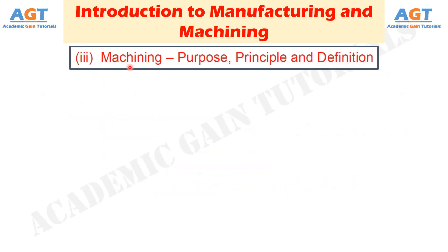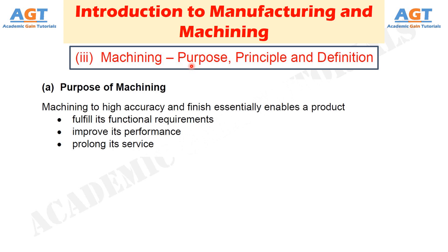Now let's look into the purpose, principle, and definition of machining. First, what is the purpose of machining? Most engineering components such as gears, bearings, clutches, tools, screws and nuts, etc., need dimensional and form accuracy and good surface finish for serving their purposes. Preforming like casting, forging, etc., generally cannot provide the desired accuracy and finish. For that, such preformed parts, called blanks, need semi-finishing and finishing, and it is done by machining and grinding. Grinding is also basically a machining process. Machining to high accuracy and finish essentially enables a product to fulfill its functional requirements, improve its performance, and prolong its service.